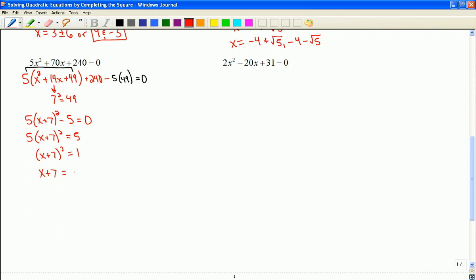So x plus 7 is going to be plus or minus root 1, which of course is just 1. So x is equal to negative 7 plus or minus 1. So that's negative 8 or negative 6.